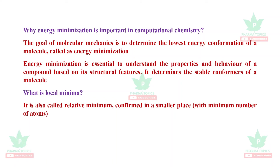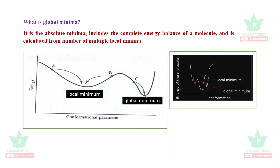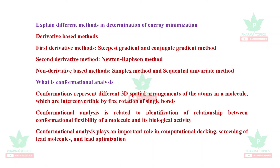The energy minimization step is essential to understand the properties and behavior of a compound based on its structural features. It determines the stable conformations of a molecule. Local minima is also called relative minimum — a conformation in a smaller region with a minimum energy. Global minima is the absolute minimum. The energy fluctuates through multiple local minima and attains stability at the global minimum; that conformer is called the global minimal conformer.